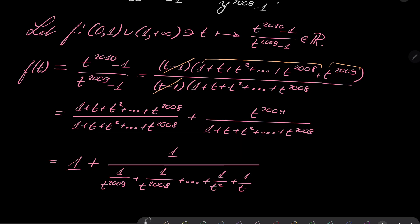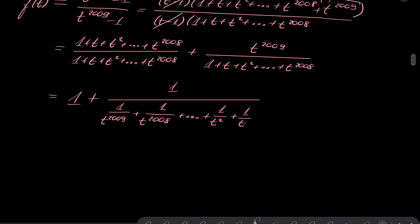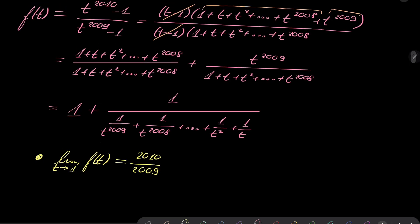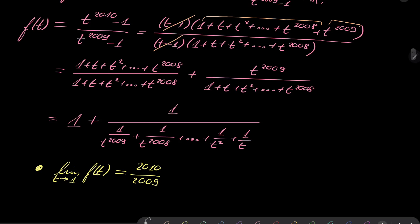First of all, notice that limit as t goes to 1 of f(t) exists and equals 2010 over 2009. I know this from this form, because here we have 2010 terms and here we have 2009 terms.